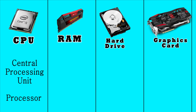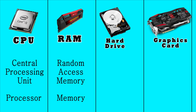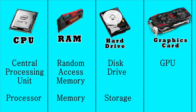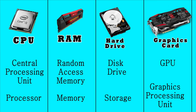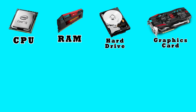RAM stands for random access memory and is often referred to as just memory. A hard drive is often referred to as a disk drive or storage. And a graphics card is also known as a GPU, or graphics processing unit. For this explanation, I'll be using the terms CPU, RAM, hard drive, and graphics card.